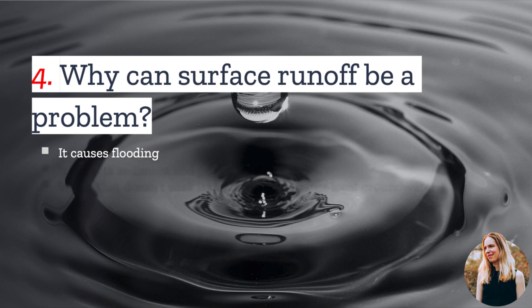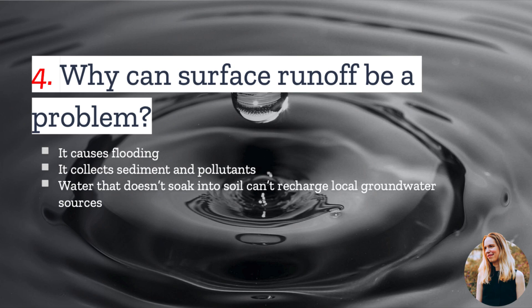Number four: why can surface runoff be a problem? The main problem is that large volumes can overwhelm storm drains and cause localized flooding. But runoff also gathers sediment and pollutants when it runs over surfaces like driveways and roads, and this can end up in natural waterways.